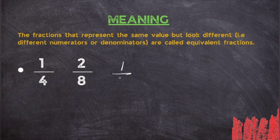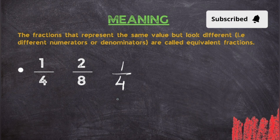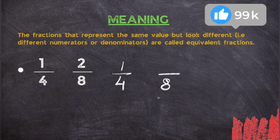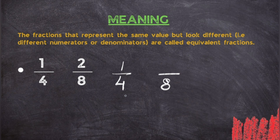First, we will take the fraction 1 upon 4. Always remember, with fractions you will need to make the denominator the same. Whenever you see a question related to fractions, check the denominators first. Here we have 1 upon 4, and we write the denominator of the other fraction, which is 8. Now look at these two numbers — 4 and 8 — and think: 4 into what gives you 8? It is 4 times 2.